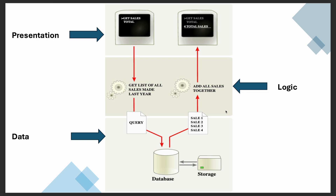Here's an example of Odoo's three-layer architecture. Say you want to get the sales orders. First, the presentation layer sends a request — we want total sales. That goes to the logic layer, which processes the request, converts it into a database query, and sends it to the data layer. The database returns the data, it goes back to the logic layer to be combined, and the result — say four total sales orders — is returned. That's the layered architecture in action.